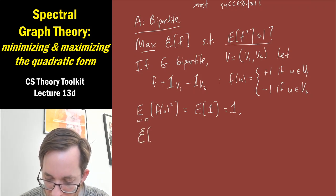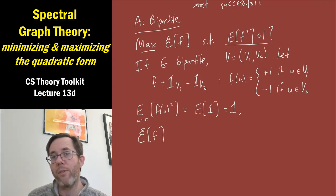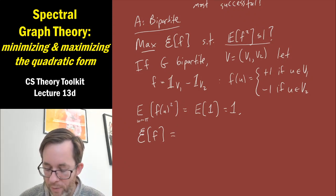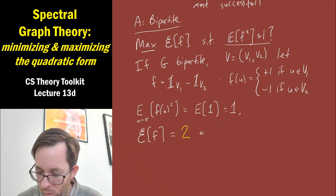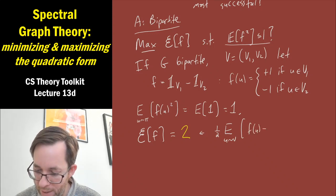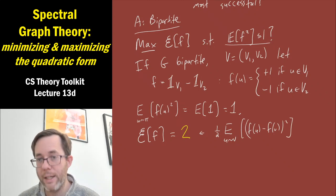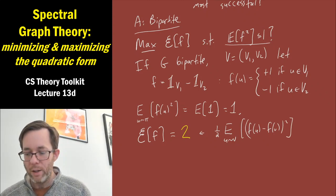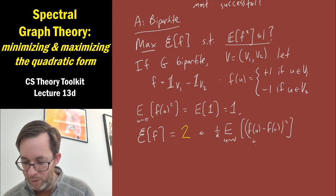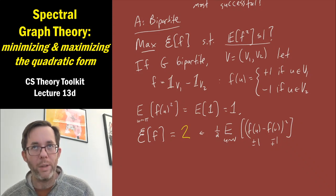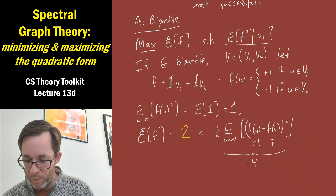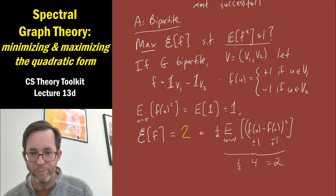What is the quadratic form value for this f? The quadratic form is one-half times the expectation over a random edge uv of (f(u) − f(v)) squared. For a bipartite graph, u is always on one side and v on the other, so one endpoint has value +1 and the other −1. The difference is ±2, the squared difference is 4, the expectation is 4, and multiplying by one-half gives a quadratic form value of 2.